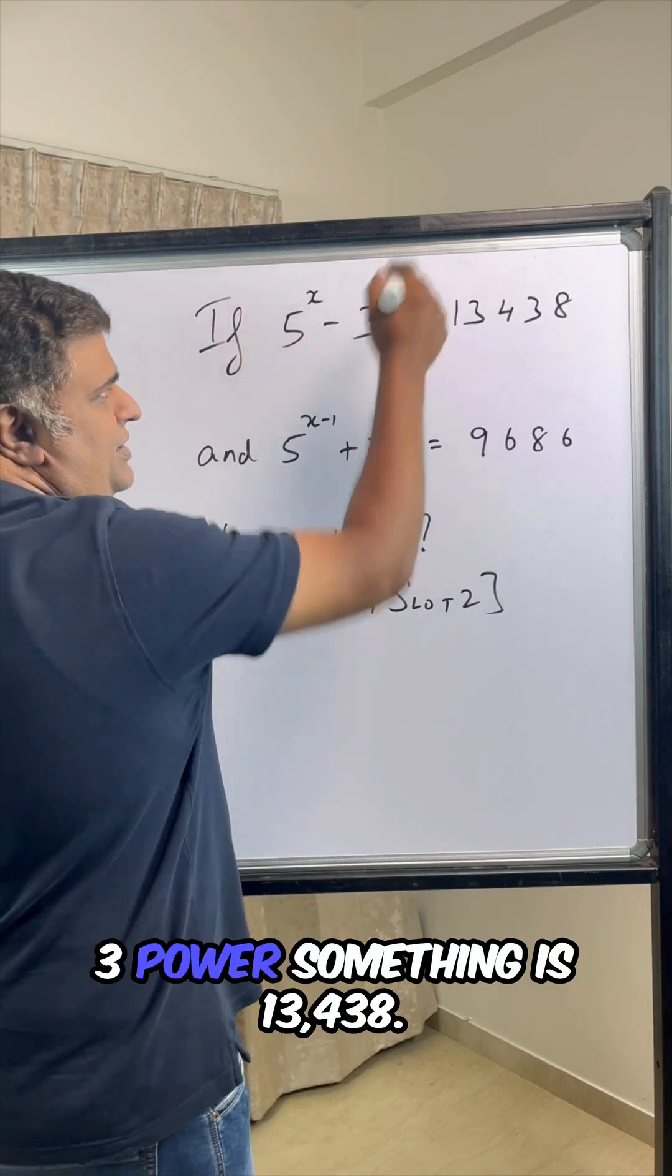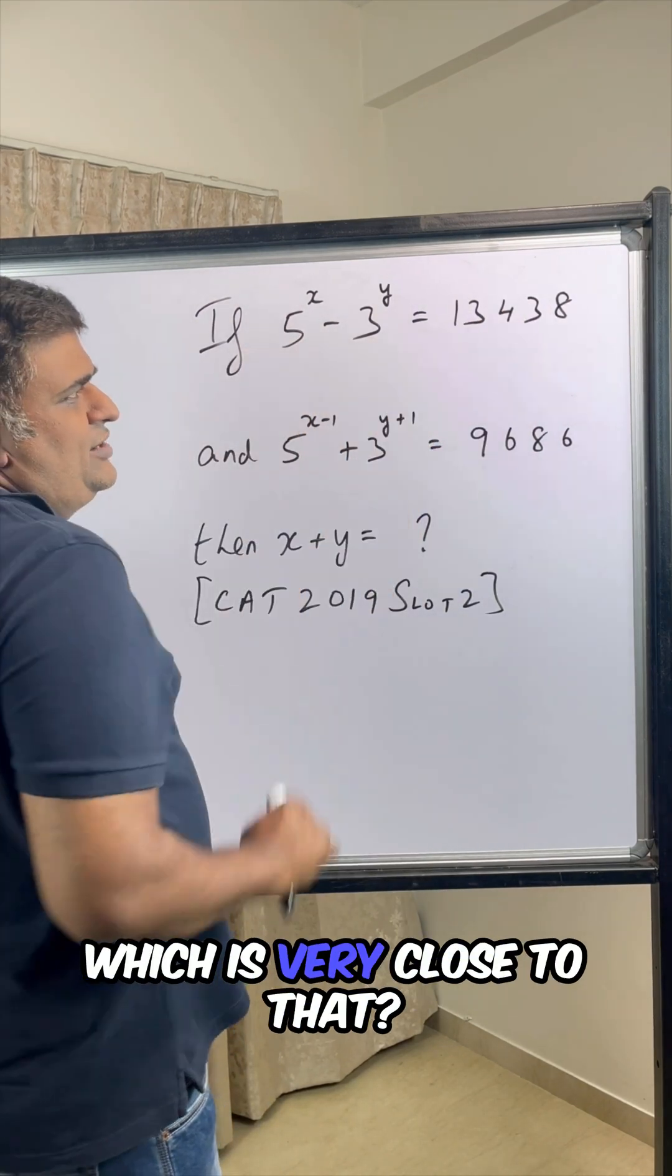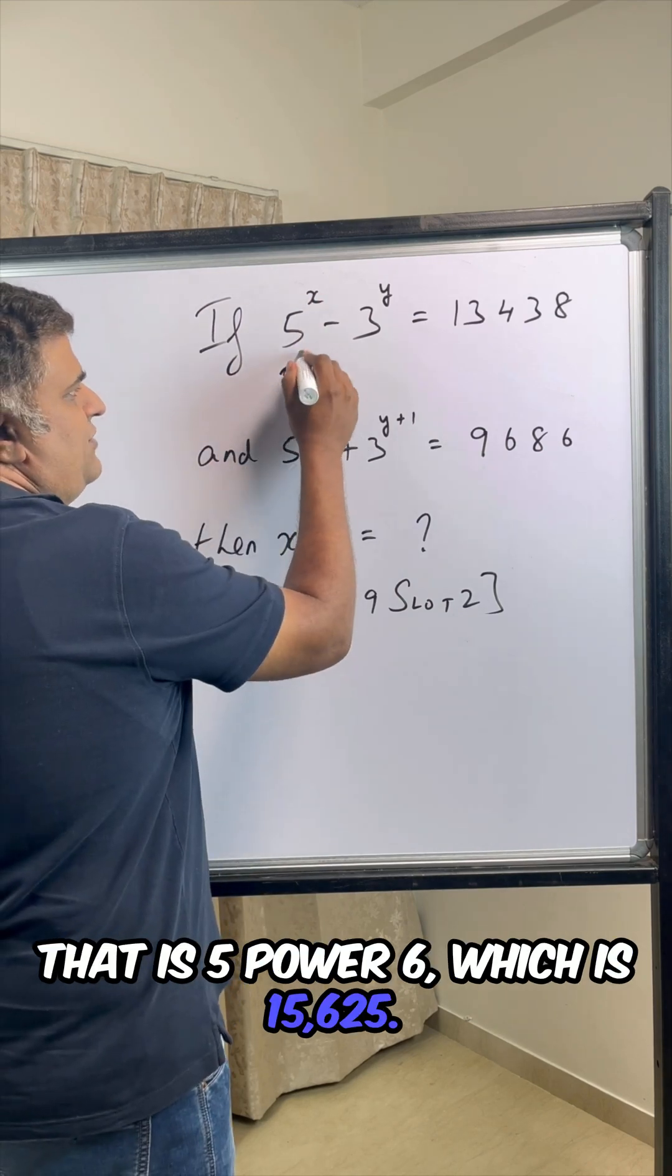5 power something, a big number, minus 3 power something is 13,438. What is the 5 power which is very close to that? That is 5 power 6, which is 15,625.